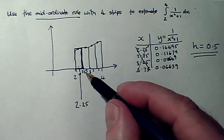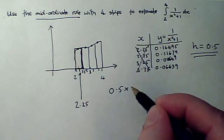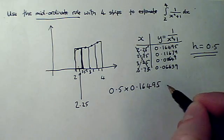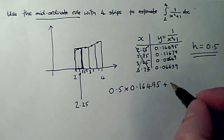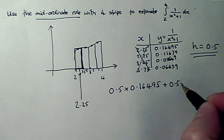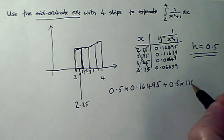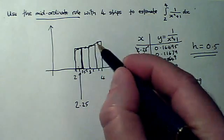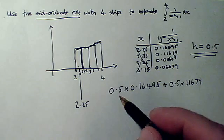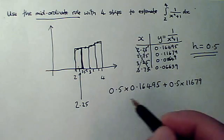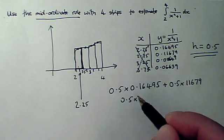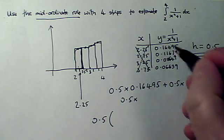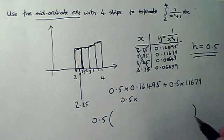So the width of the first strip is 0.5 times 0.16495, and all I've got to do is add on 0.5 times each of the other values, because that's the area of the rectangle that I'll be using to approximate each strip. You can shorten the process by taking the 0.5, which each term has on it, outside a bracket and having 0.5 times, and then these y-coordinates added together.